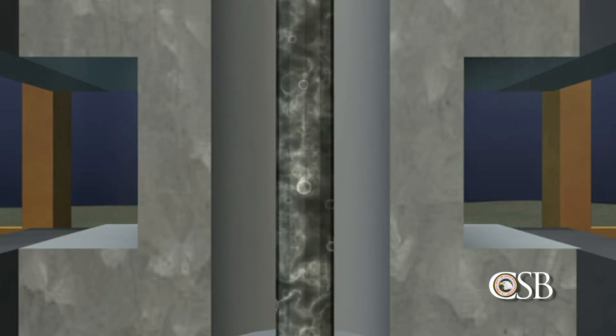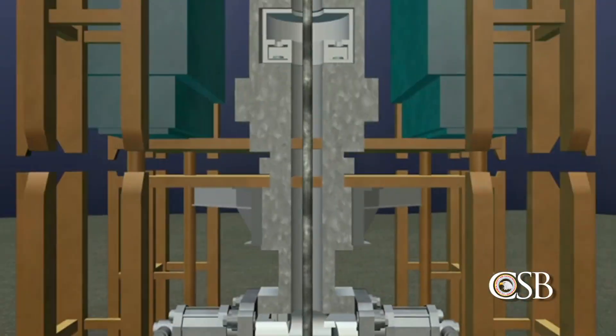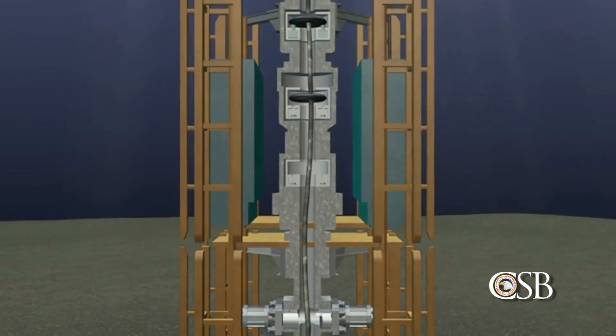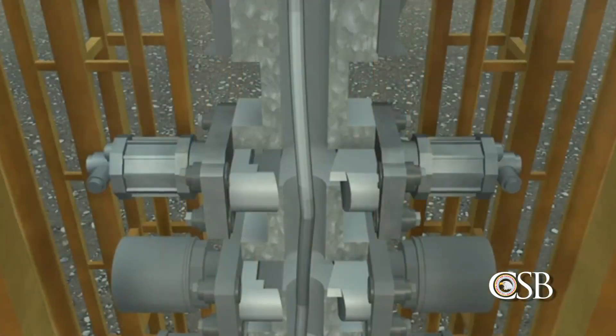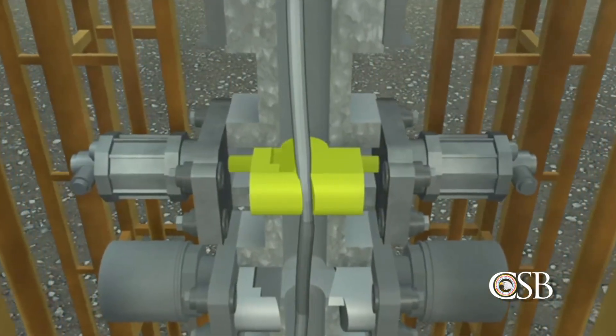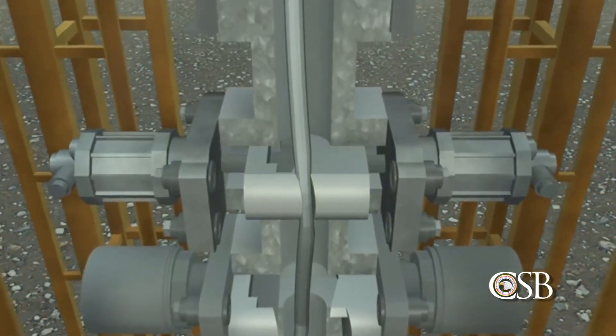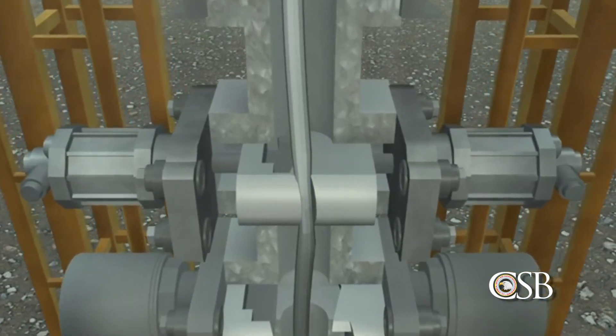After extensive analysis, the CSB concluded that this large difference in pressure likely caused the drill pipe to buckle, essentially bending the pipe off-center inside the blowout preventer. The buckling pushed sections of the drill pipe outside of the reach of the blind shear ram blades. This would eventually prove to be catastrophic.